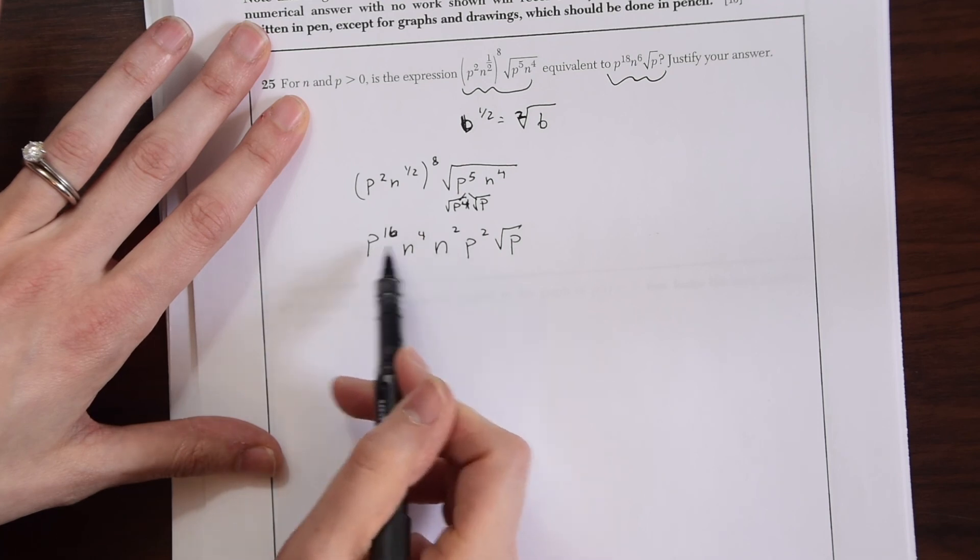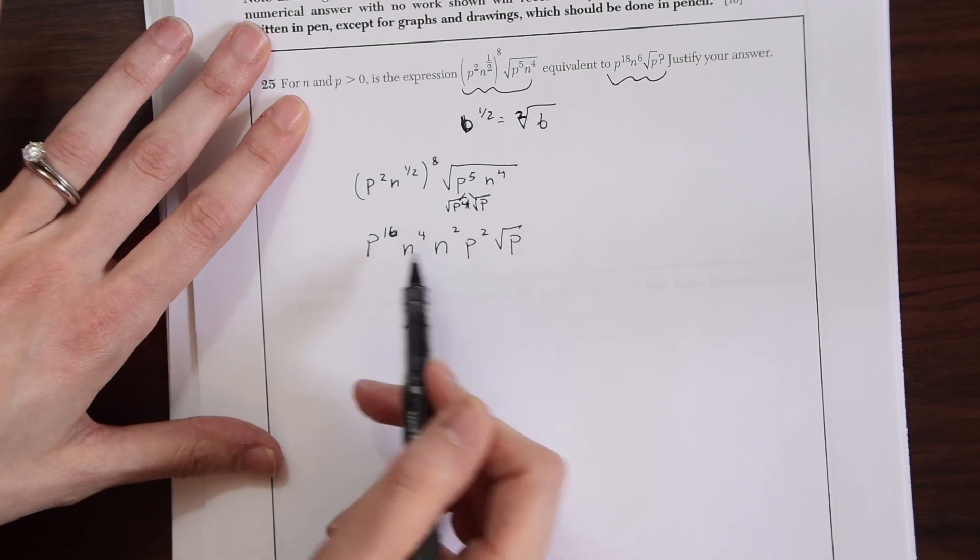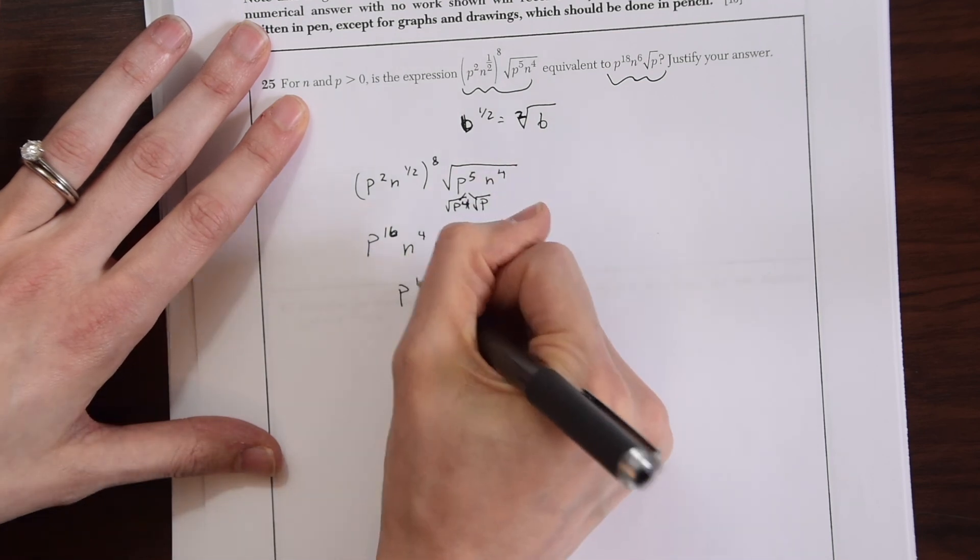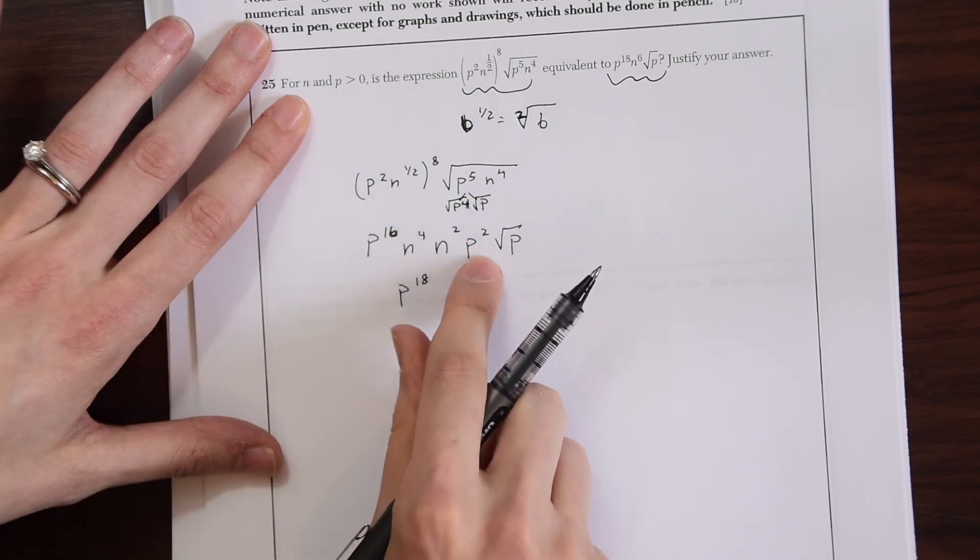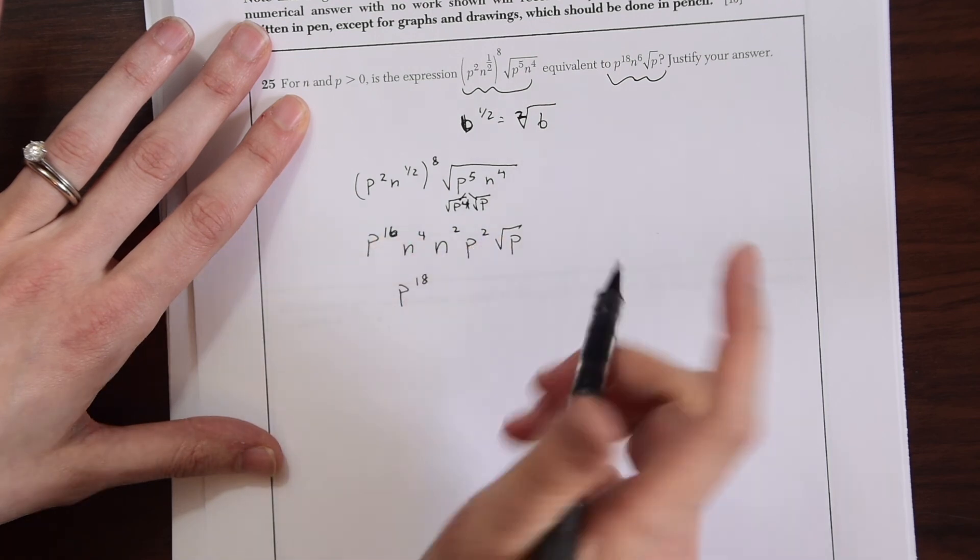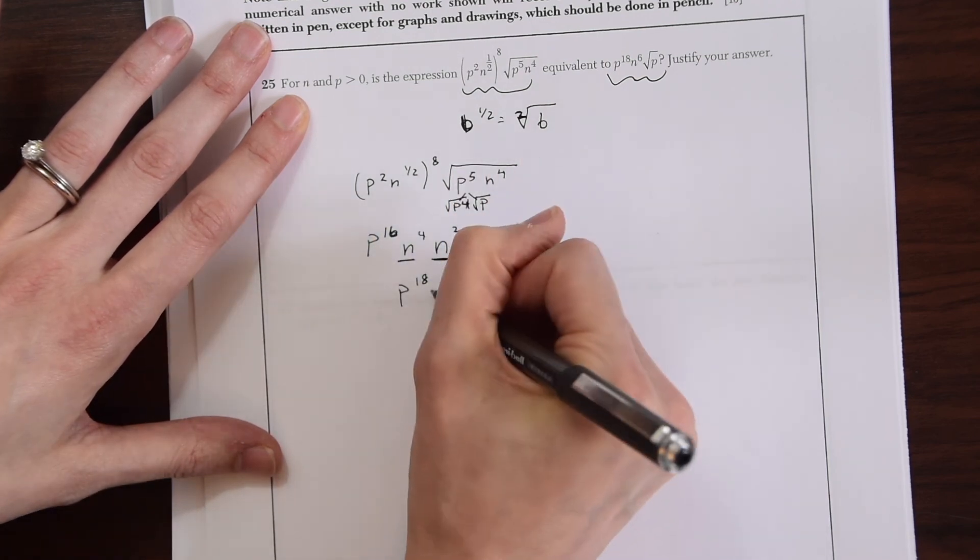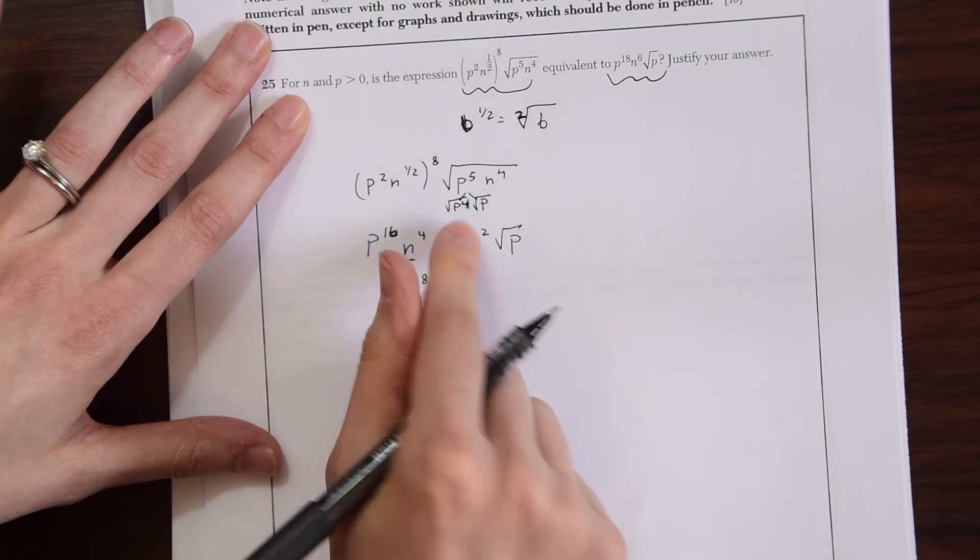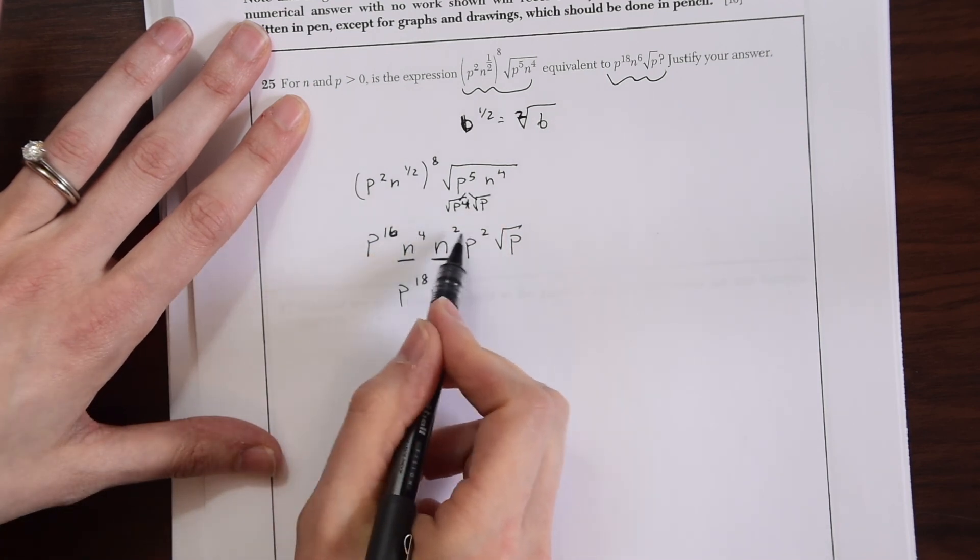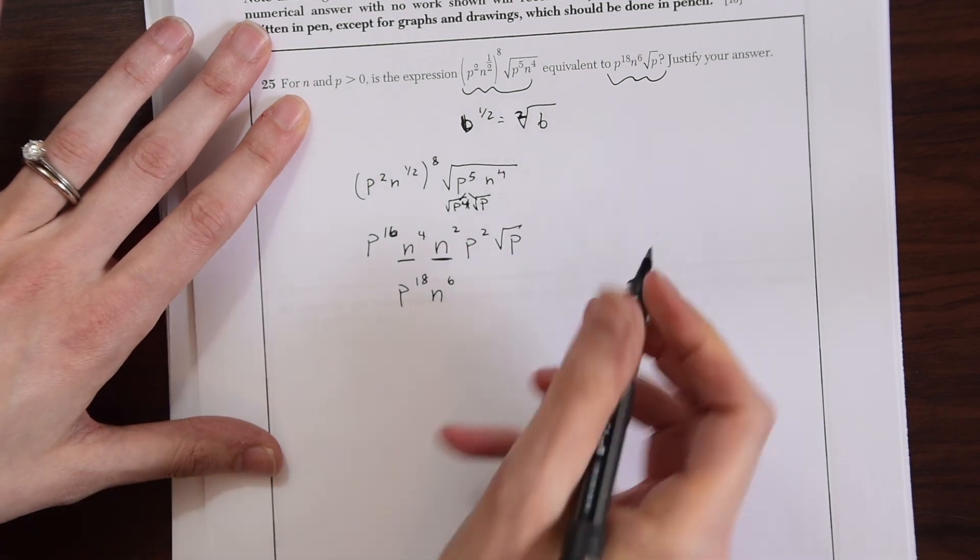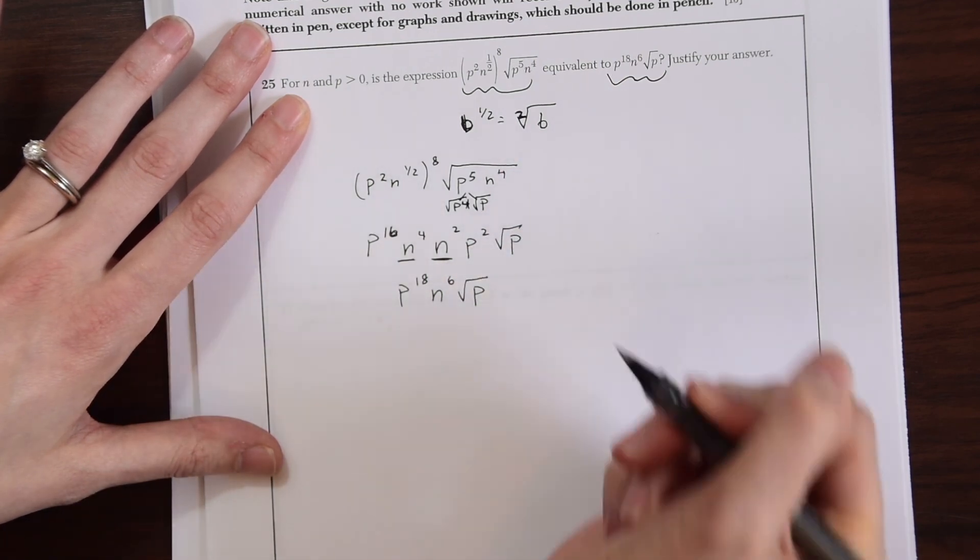Notice now we can combine some like terms. We have two p's 16, 17, 18, just adding the exponents together. P to the 16th times p to the second would be 16 plus 2 which gives you 18. And then we have these two n's, n to the fourth and n to the second. Just add the two exponents together 4 plus 2 and we get 6. And then we're left with radical p.